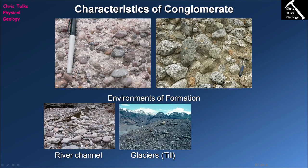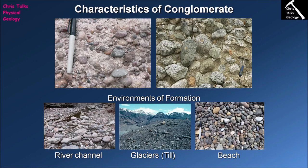A glacial till doesn't look anything like a typical conglomerate. In a typical conglomerate the field of view is mostly taken up by clasts, whereas in a till the field of view would be mostly matrix with only a few rounded clasts spread throughout. The final environment where we expect conglomerates to form is in energetic beach environments, where powerful waves can move larger clasts around and round them off. Here in this beach sediment we have very well-rounded clasts — such as this oval clast here — which reflects the high-energy beach environment.